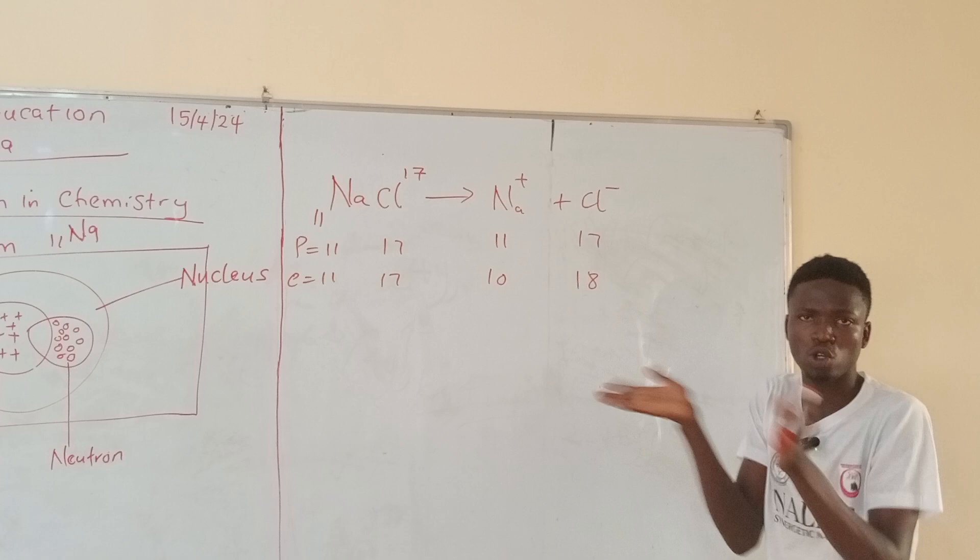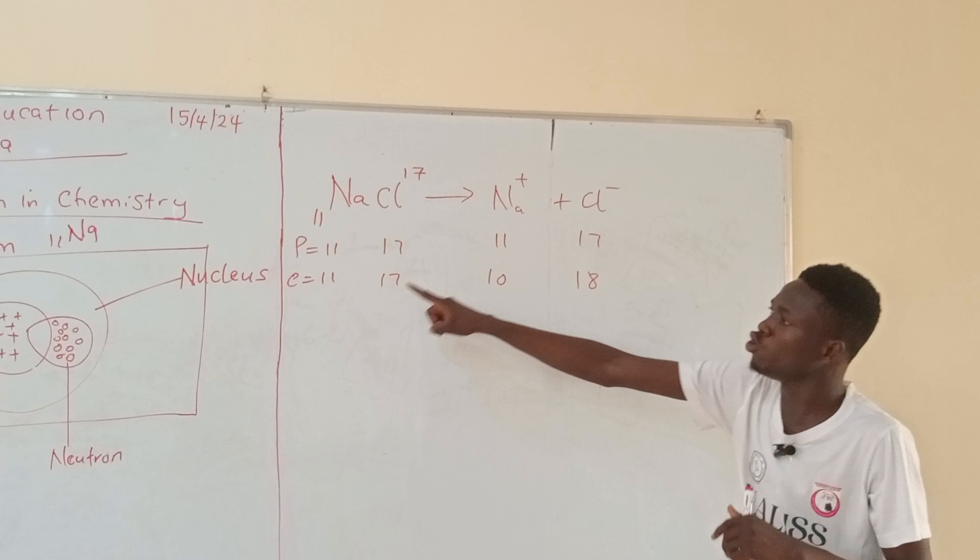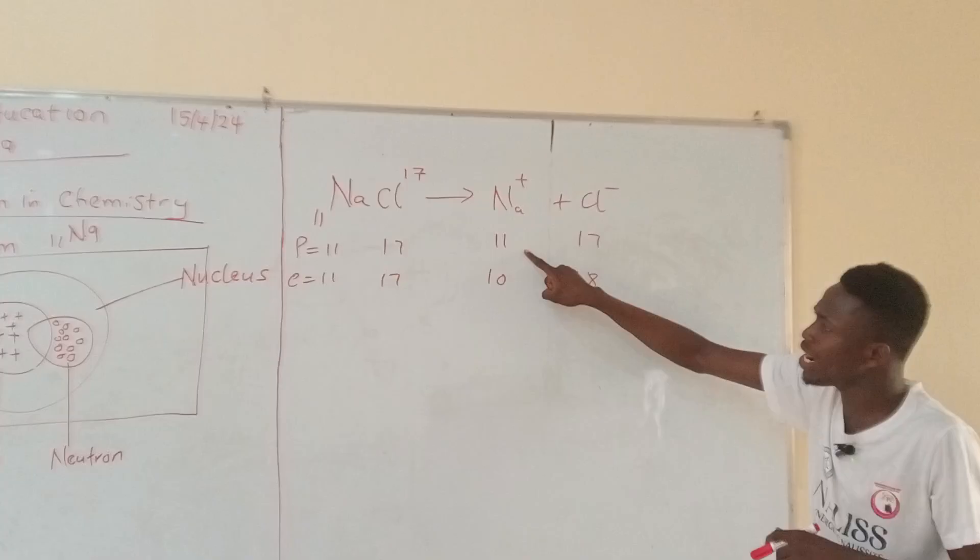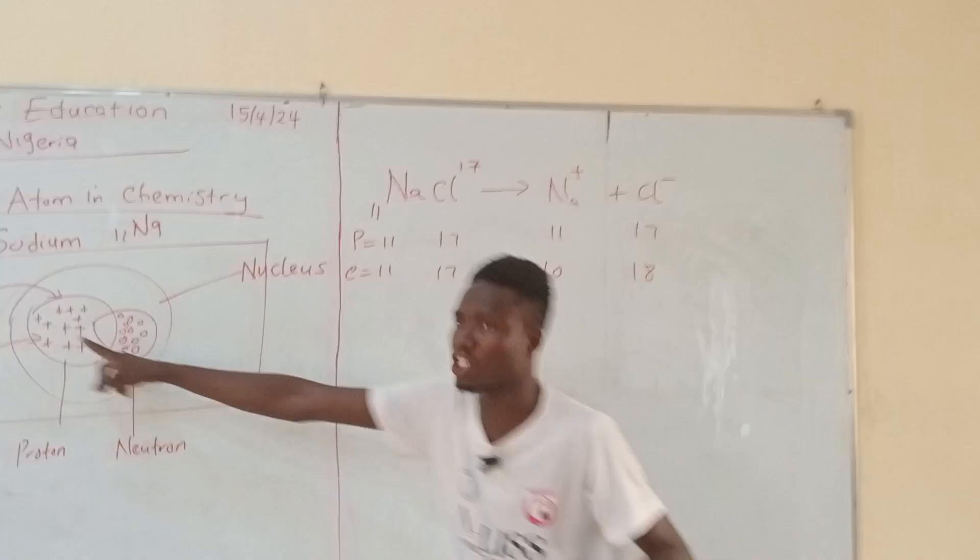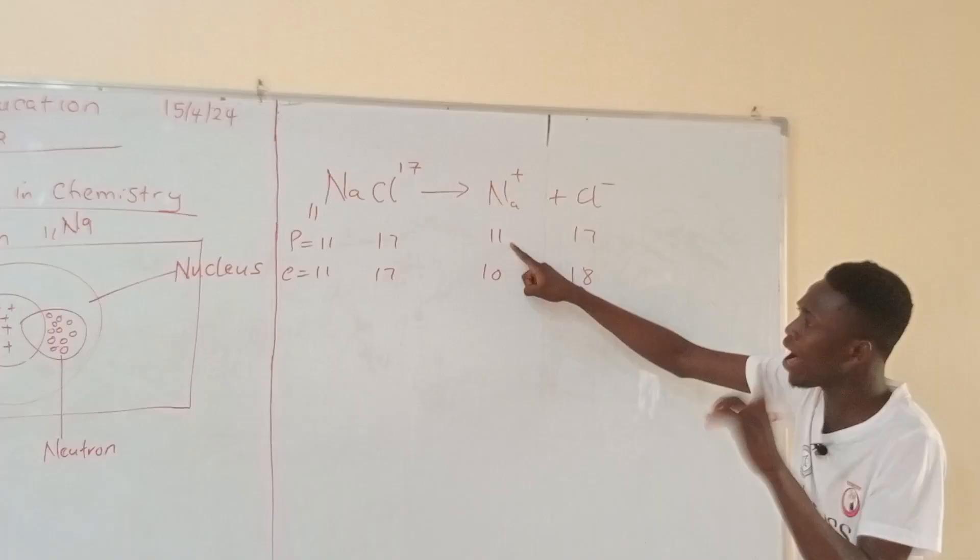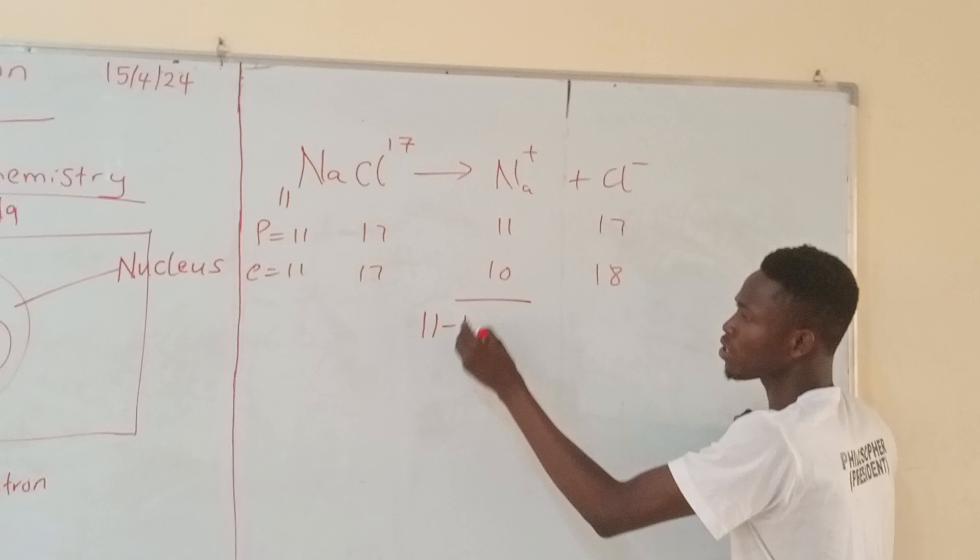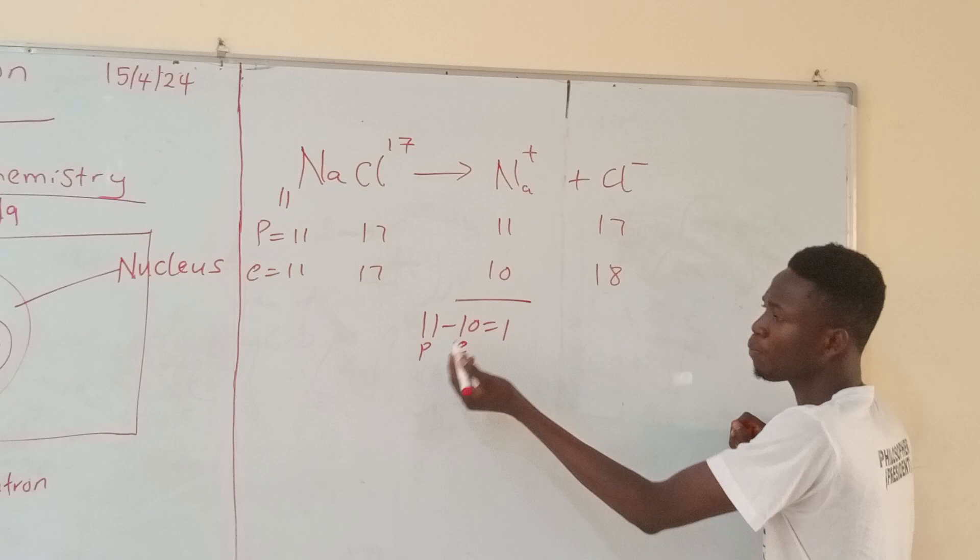So what makes a species charged is whether you lose electron or you gain electron. The reason why sodium is Na+ is that proton is one more than electron. Don't forget that proton is positively charged. So the reason why sodium is called positive is that there is one more proton than electron. By the time you say 11 minus 10, what will you get? One. That means proton is one more than electron.